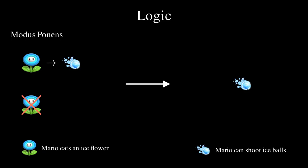Now, what if we negate the second premise? That is, if we say that Mario did not eat an ice flower. What can we now deduce? You might be tempted to conclude that Mario cannot shoot ice balls, but that's not necessarily true. For instance, he could have a penguin suit. We cannot conclude anything from these statements. However, what if we replace the second premise with Mario cannot shoot ice balls? This time, we can conclude that Mario definitely did not eat an ice flower. This example is called the modus tollens.